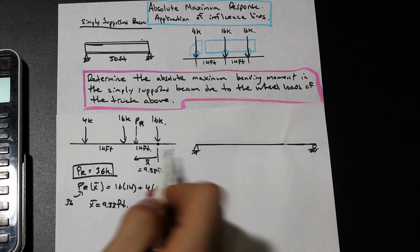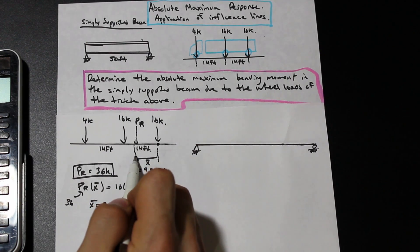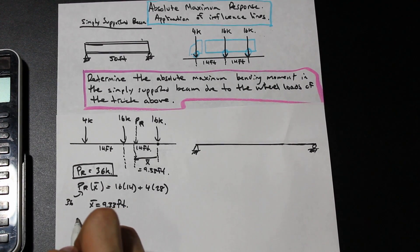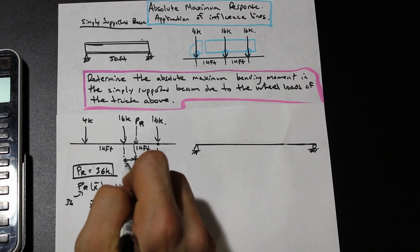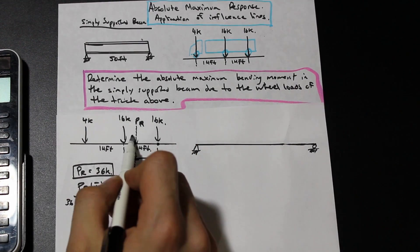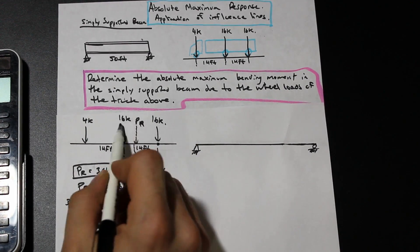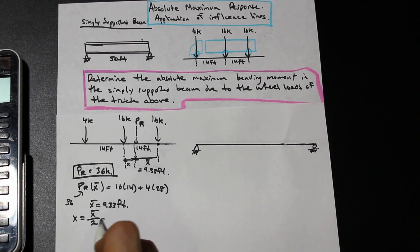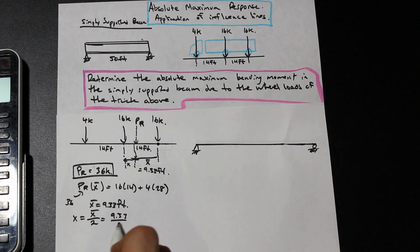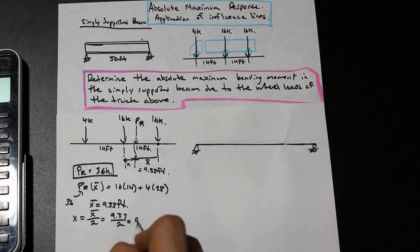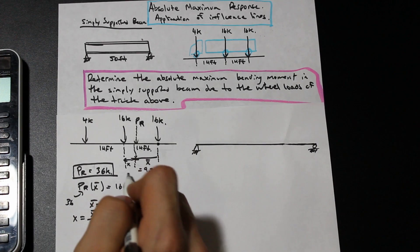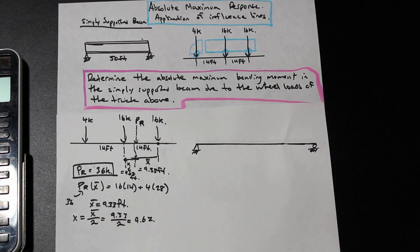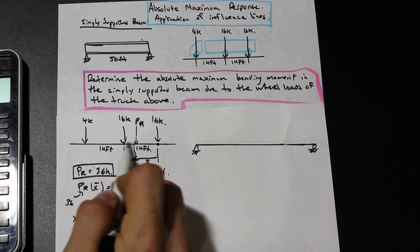So we know that this distance is 9.33. And there's a little formula here that might help you out. We have and this distance here is called x. So x is the distance from the closest load to the resultant force, and x is simply x bar over two. And that is 9.33 over two, and we'll call that 4.67. So this distance here is 4.67 feet.